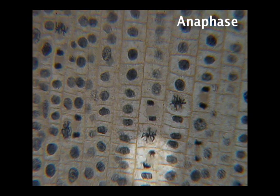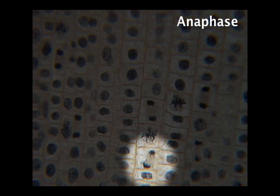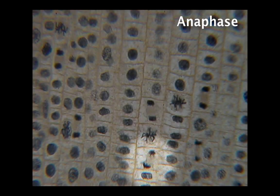This cell at the bottom in the center is clearly in anaphase. The sister chromatids are being pulled to opposite poles of the cell, and the separation is clear.